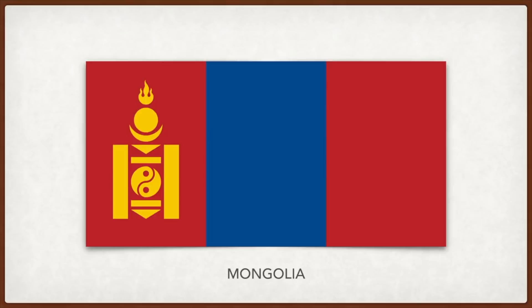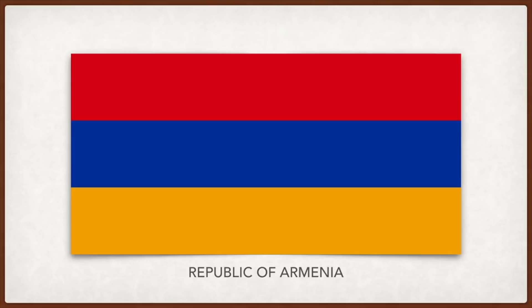Armenia: the red is for the Armenian Highlands, the Armenian people's struggle for survival, the maintenance of the Christian faith, and independence. The blue is for the will of the people to live beneath peaceful skies. The orange is for the creative talent and hard-working nature of the people of Armenia.